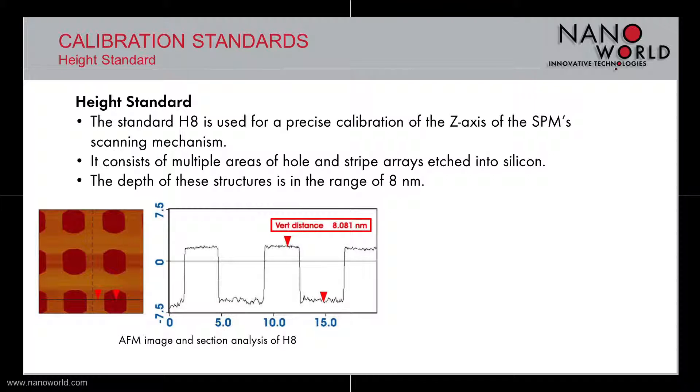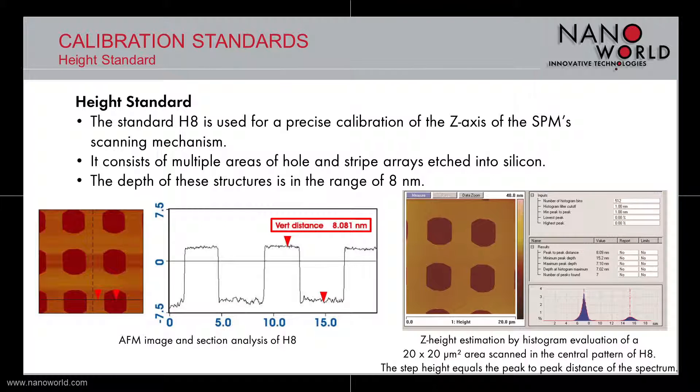On bottom right you can observe a Z-height estimation by histogram evaluation of a 20x20 μm² scan in the central pattern of the H8 standard. The step height equals the peak-to-peak distance of the spectrum and its value is 8.09 nm.